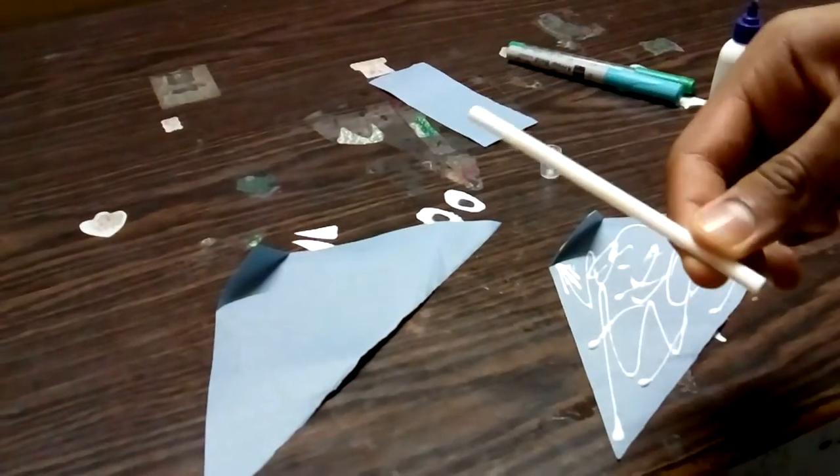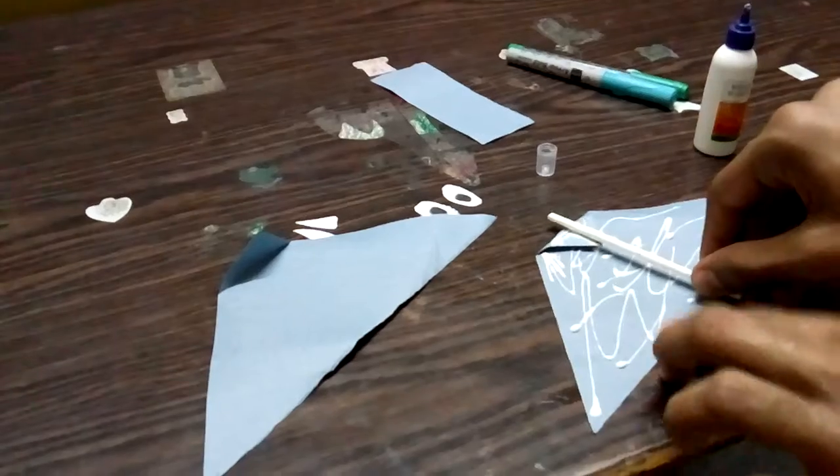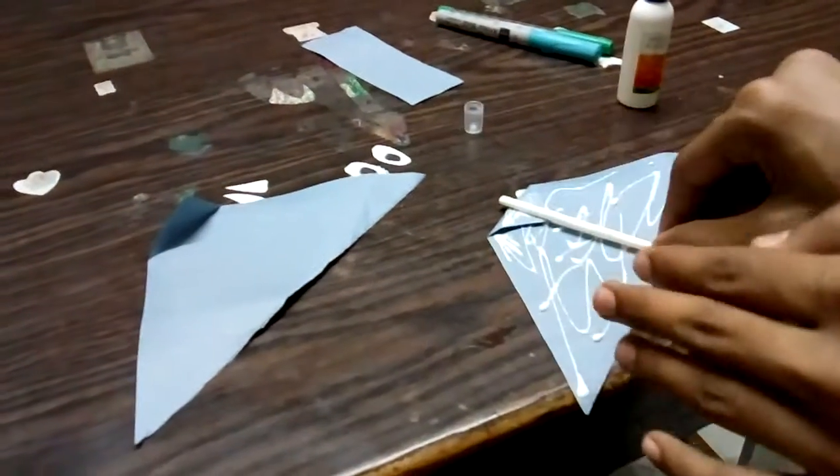Now take the straw and paste it in this way. Some portion of the straw must be outside of the sheet so that the trunk moves when we blow it.